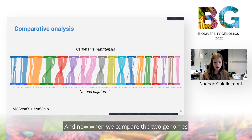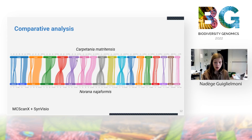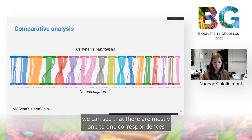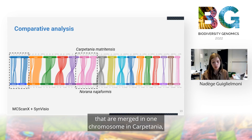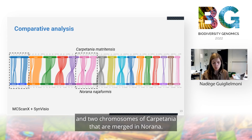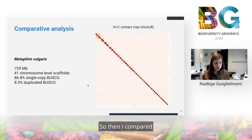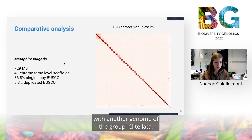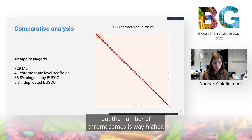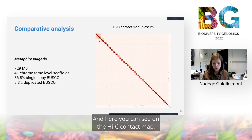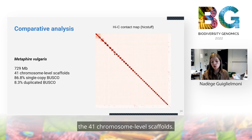When we compare the two genomes and their chromosomes using synteny, we can see mostly one-to-one correspondences between chromosomes. The only exception is that two chromosomes of Norana are merged into one chromosome in Carpetania, and two chromosomes of Carpetania are merged in Norana. I then compared with another genome from Clitellata, Metaphoria vulgaris. Its assembly size is fairly close to those of Norana and Carpetania, but the number of chromosomes is much higher — 41 chromosome-level scaffolds as seen in the Hi-C contact map.